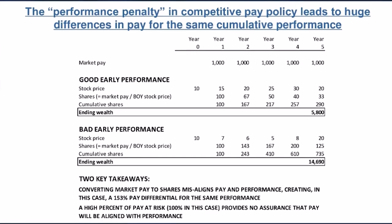By contrast, in bad early performance, the number of shares in year three based on the stock price at the end of year two is 167. It's 200 in year four based on the $5 price at the end of year three. Comparing these two scenarios, for good early performance we end up with a total of 290 shares worth $5,800. But for bad early performance, we end up with 735 shares worth $14,690.